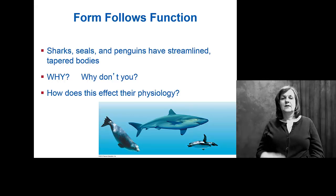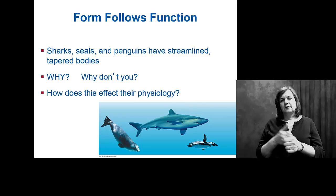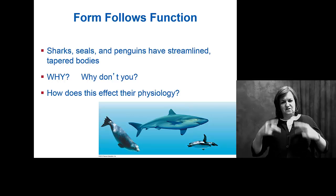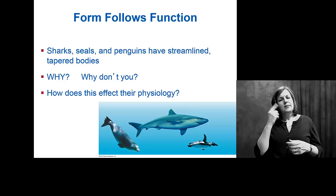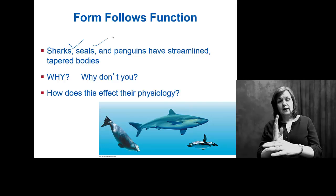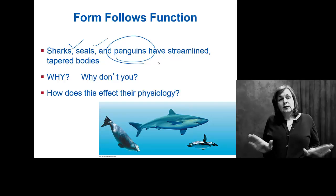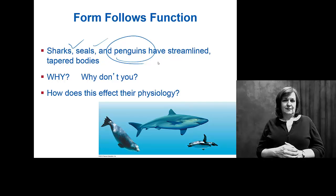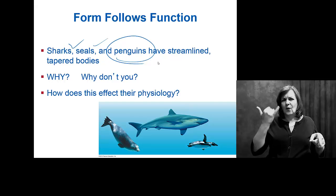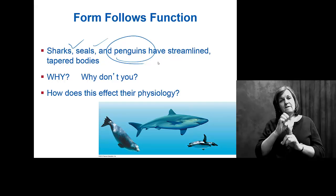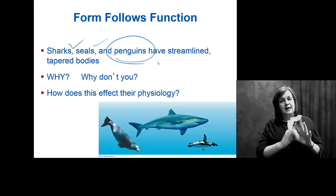We have mentioned the idea before of form follows function. When we look at an organism being shaped a particular way, having particular physical characteristics, we certainly have to think about the environment in which they live and why they might have a particular form. Like, why are sharks and seals and penguins streamlined — why are they torpedo-shaped compared to you? How does your environment drive the adaptations and evolution of characteristics that would make you better adapted to that environment?